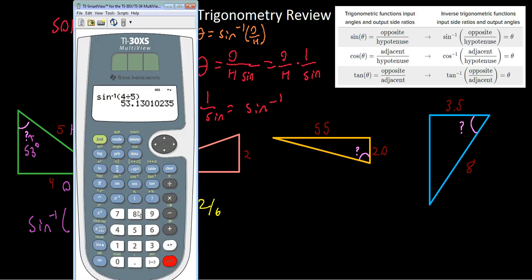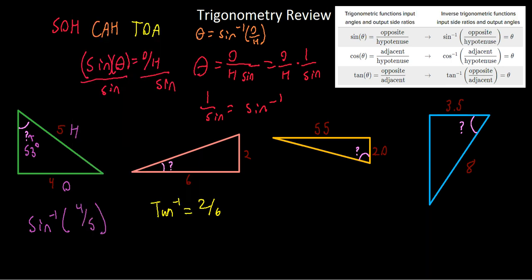So we'll just type it into our calculator. We'll do inverse tangent, so second tangent to get the inverse above it, of 2 over 6. What did we get? We got 18, basically just 18 degrees.